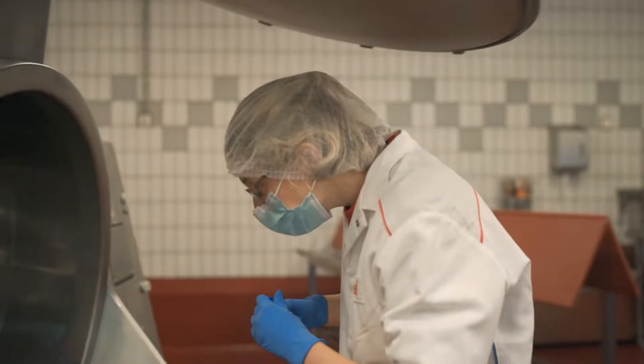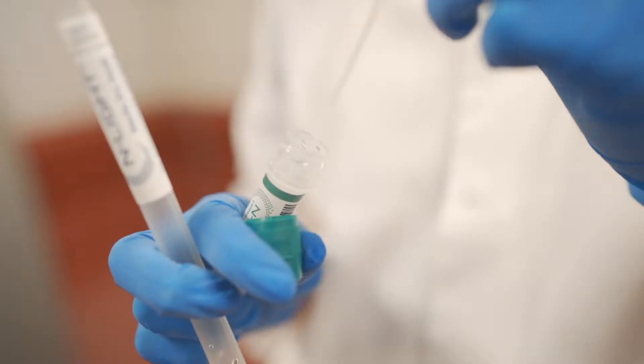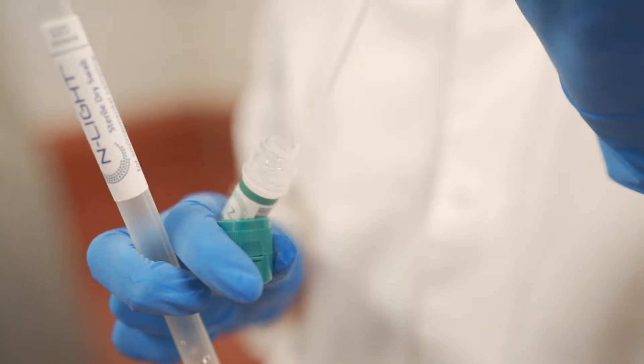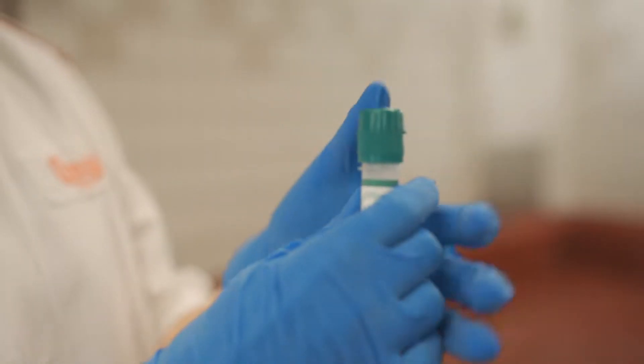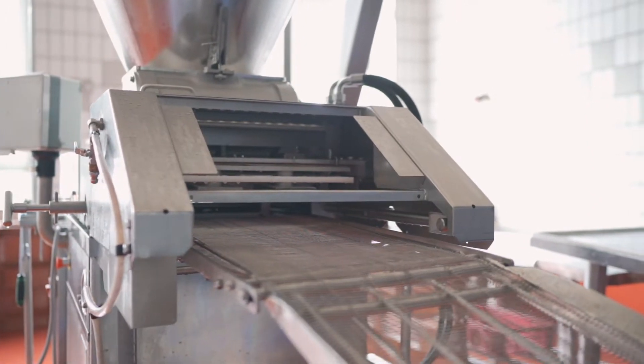Enlite Listeria Monocytogenes is a qualitative test method for the rapid detection of the foodborne bacterial pathogen Listeria Monocytogenes. The test method is suitable for use in food processing areas and equipment as part of an environmental monitoring program.